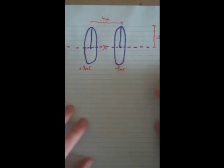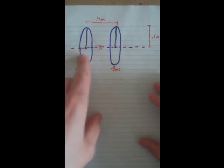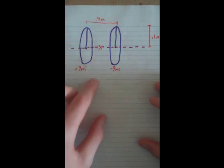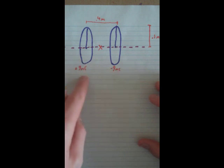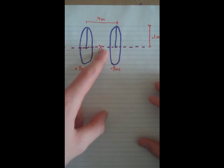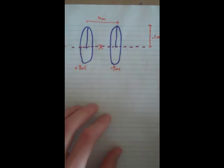Now let's go on to our next one: two loops. Here we have two loops. They are concentric with each other — meaning they're in a line. They're a distance of 0.4 meters from each other. They both have the same charge magnitude, but one is positive 9 nanocoulombs and the other is negative 9 nanocoulombs. We're trying to find the electric field at the middle of the two loops, and they have a radius of 0.1 meters.